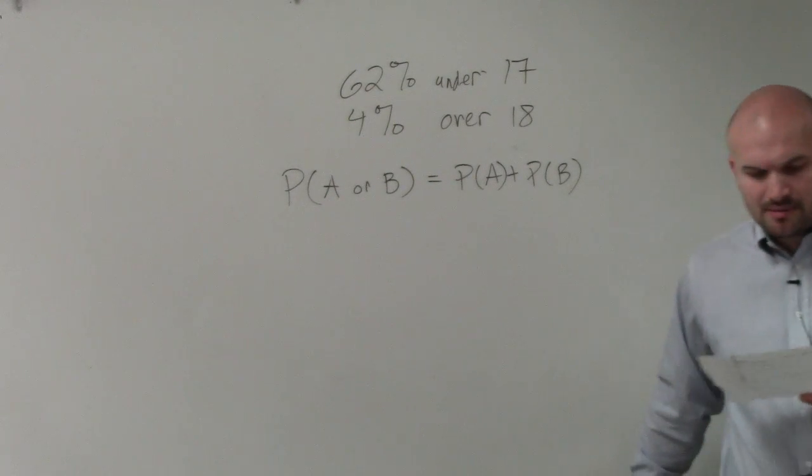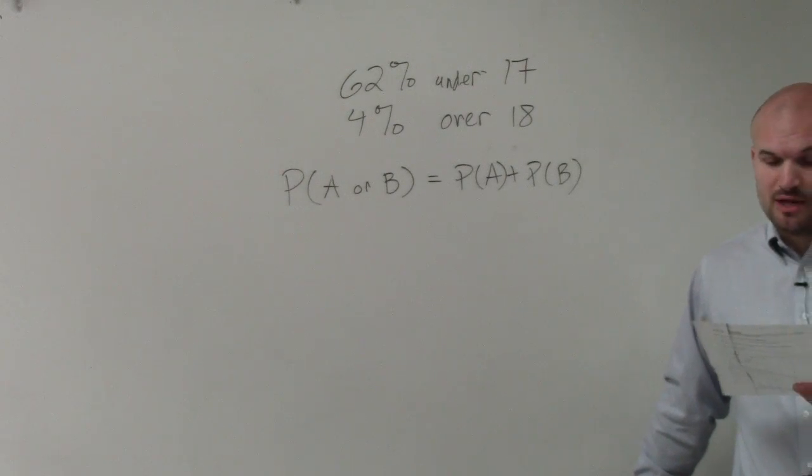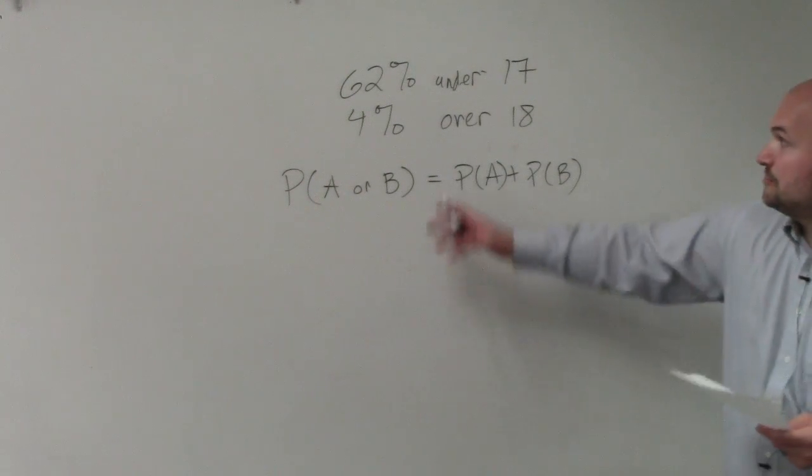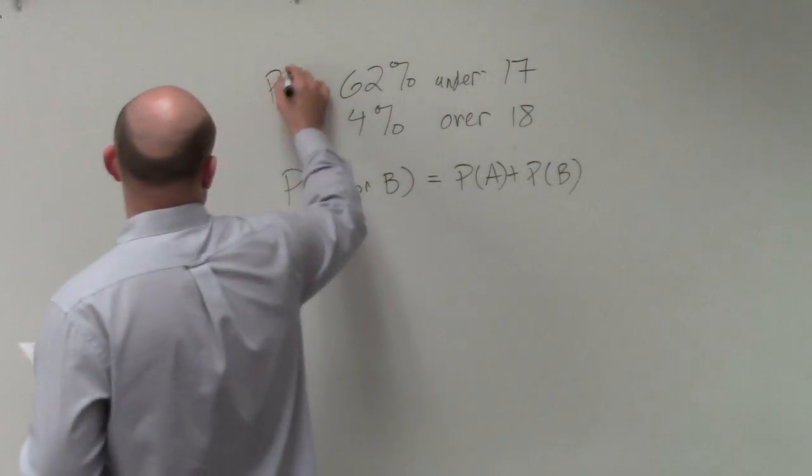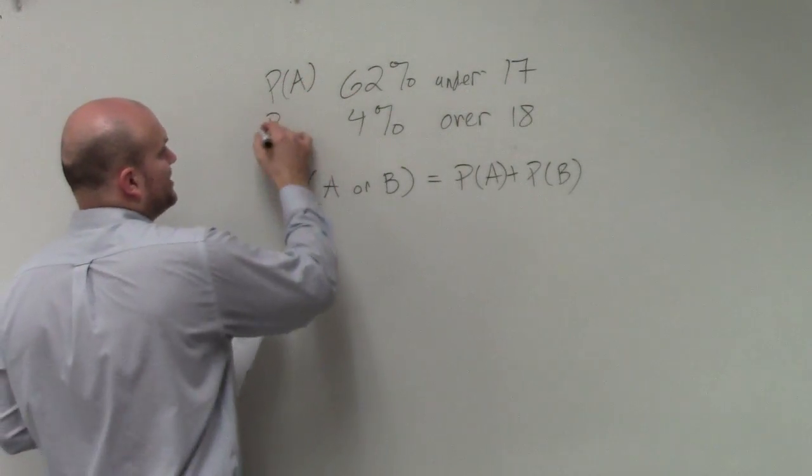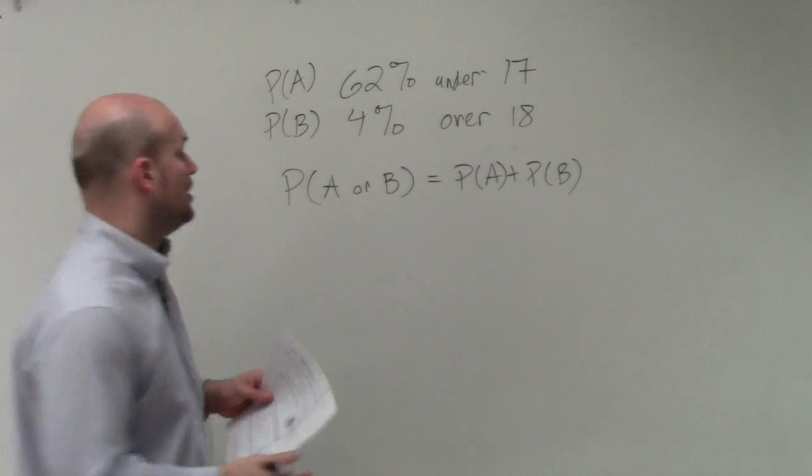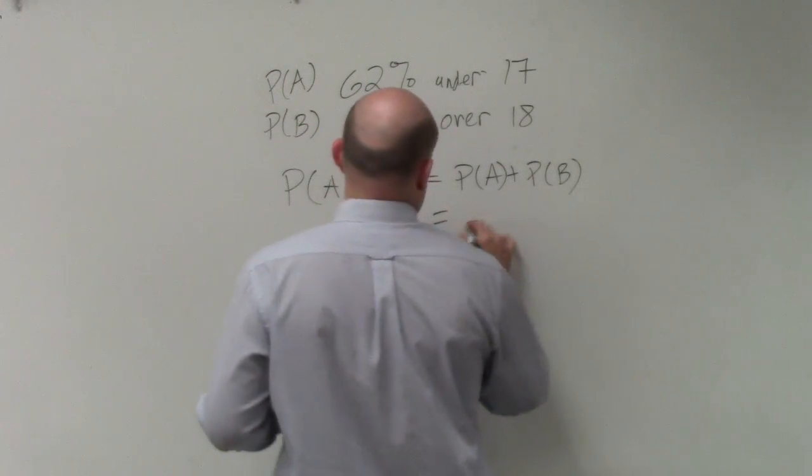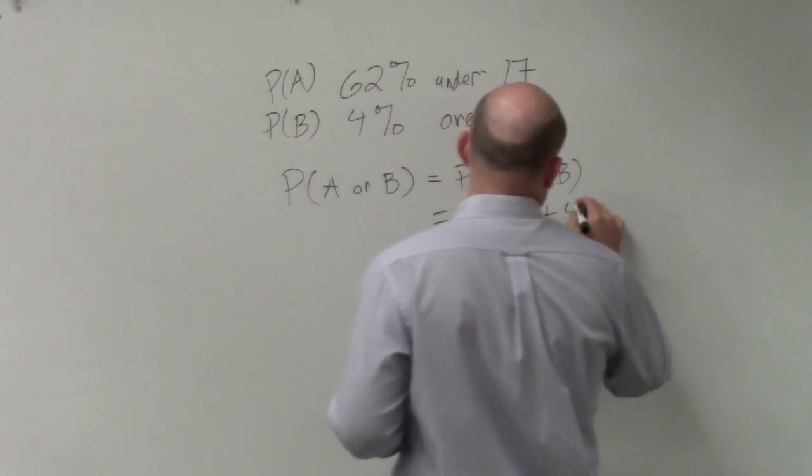So Daniel, when we're doing this problem, basically what we have is they're asking, what is the probability that a student chosen at random is under 17, which would be probability of A, or over 18, which would be the probability of B. So all I simply need to do is add 62% plus 4%.